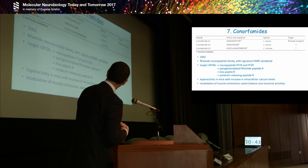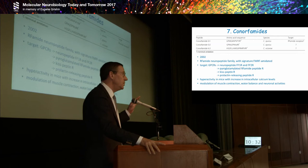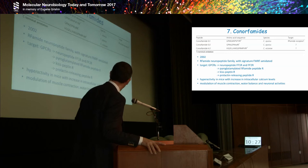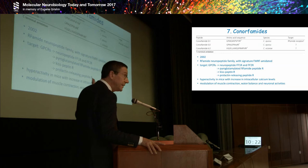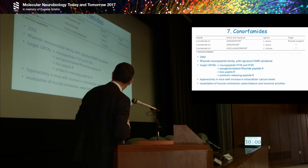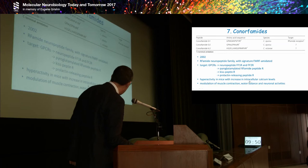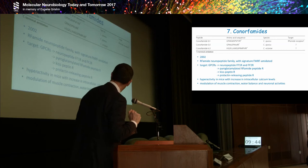Seventh family, the conorfamides. Three members are known since 2002. The RF-amide neuropeptide family is an incredibly large family, well known among biologists interested in insect peptide neurobiology. The signature FMRF-amidated is a hallmark. They target GPCRs—neuropeptide FF1R and 2R, pyroglutamated RF-amide peptide R. If you talk to biologists, specialists in insect development, they all know about kisspeptin, the prolactin-releasing peptides. Conuses also produce these peptides that are very homologous to what insects are capable of producing. What does it do when injected in vertebrates, like rodents, in mice? It causes hyperactivity. Hyperactivity with an increase in intracellular calcium levels. How? We don't know, but it's a clear effect. Therefore, it also modulates muscle contraction, water balance, and neuronal activities.